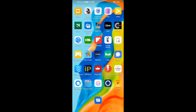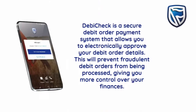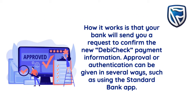Before we continue, let me first explain what a debit order slash debit check mandate is. DebiCheck is a secure debit order payment system that allows you to electronically approve the debit order details. This will prevent fraudulent debit orders from being processed, giving you more control over your finances. How it works is that your bank will send you a request to confirm the new debit check payment information — approval or authentication can be given in several ways,